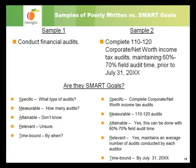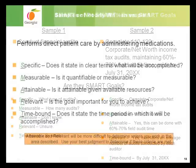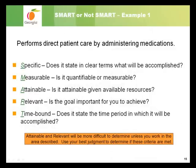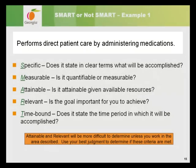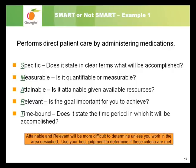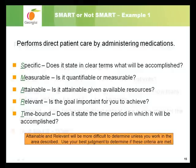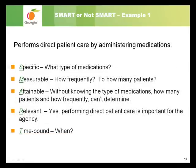Now we're going to look at several sample goals from various state agencies to see if you can apply what you've learned. Here is a sample job responsibility for a licensed practical nurse with the Department of Behavioral Health and Developmental Disabilities: 'Performs direct patient care by administering medications.' Is this goal SMART or not SMART? Pause the presentation to think through each of the criteria. You will need to use your best judgment in determining if the goal is attainable or relevant. Once you have completed your analysis, continue to see if you were correct.